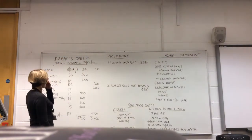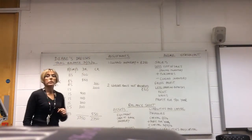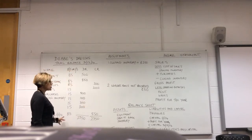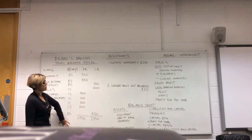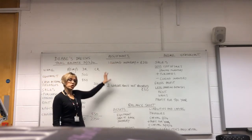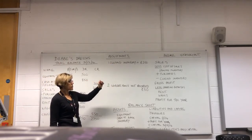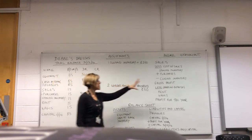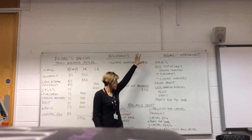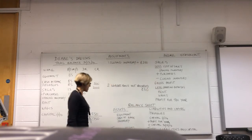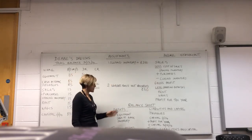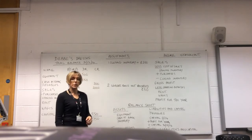Hello again. Last week we looked at the trial balance, and this week I need to look at how we take a trial balance, make some adjustments to it, and then turn that trial balance with those adjustments into an income statement or statement of profit, and a balance sheet — a statement about assets, liabilities and capital.